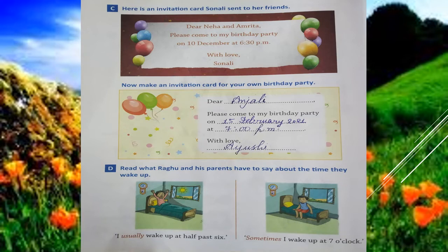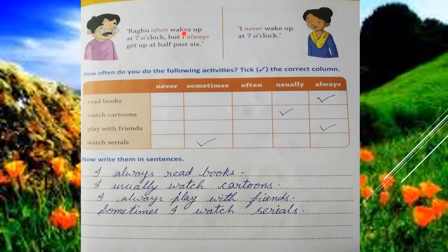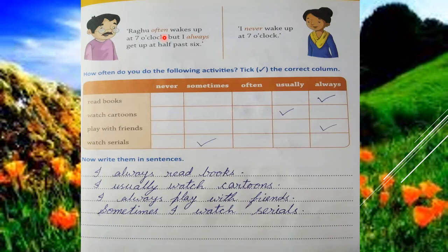Next, this is Raghu's father. He says: 'Raghu often wakes up at seven o'clock.' Here 'often' means normally, mostly — जादे तर Raghu seven o'clock तक उठता है. But I always get up at half past six. His father said: I always get up — मैं हमेशा 6:30 तक उठता हूँ. Half past six means 6:30. So 'often' means mostly, 'usually' means जादे तर, and 'always' means हमेशा.